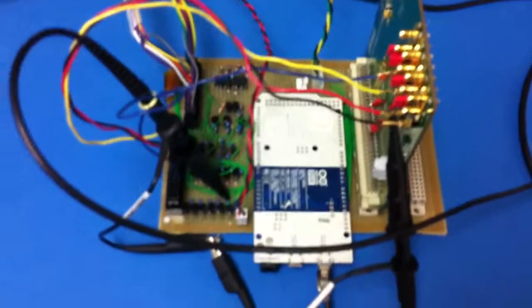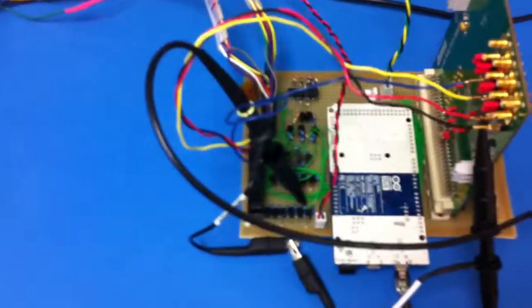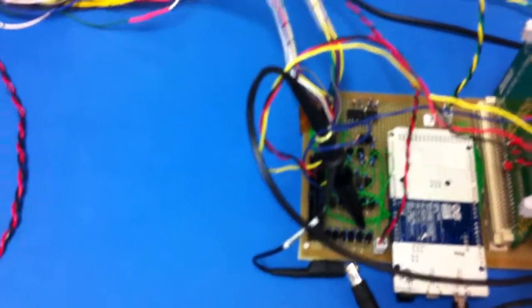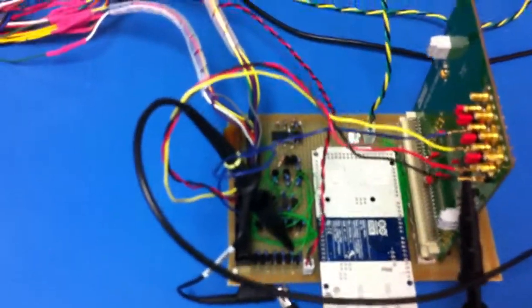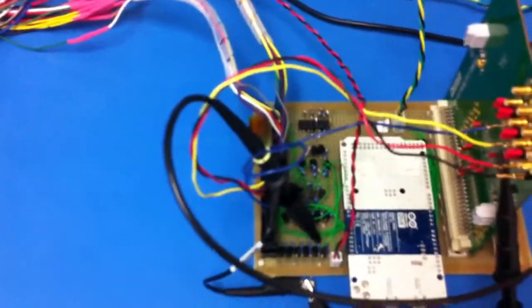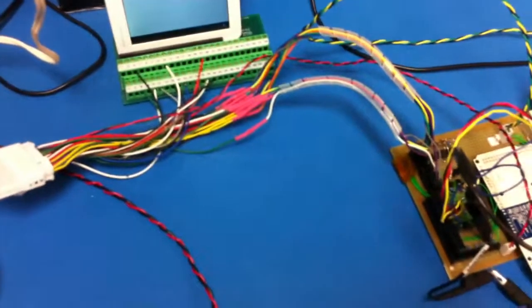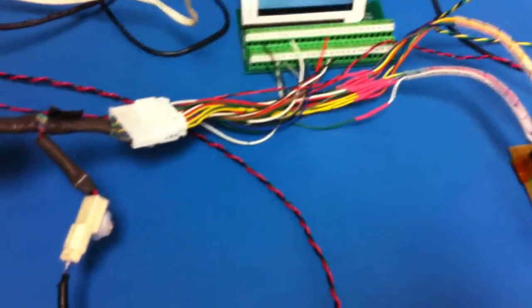I learned what the current sensor coming out of the Prius inverter looks like. It's about 1 volt per 20 amps on the generator and about 1 volt per 40 amps on the motor phases. There's actually two inverters in one inside this Prius package.